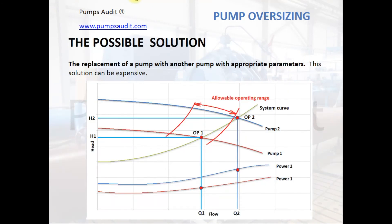Another solution is replacement of the pump with another pump with appropriate parameters — for example, one with less head. This solution can be expensive but it is much more effective. If we replace pump 2 with pump 1, pump 1 will operate within its operating range without energy loss.